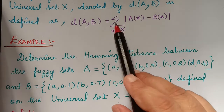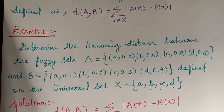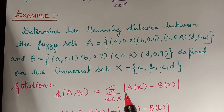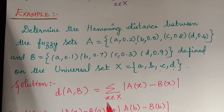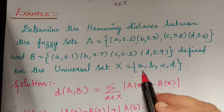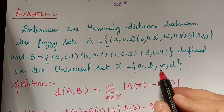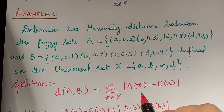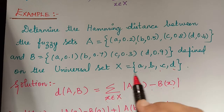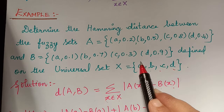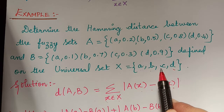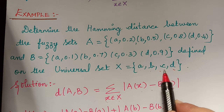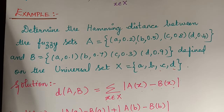By the formula of the Hamming distance we have D(A, B) equal to summation over x an element of capital X of the modulus of A(x) minus B(x). The elements of capital X are a, b, c, and d, so we have to evaluate this value for each element and then take the sum of all.